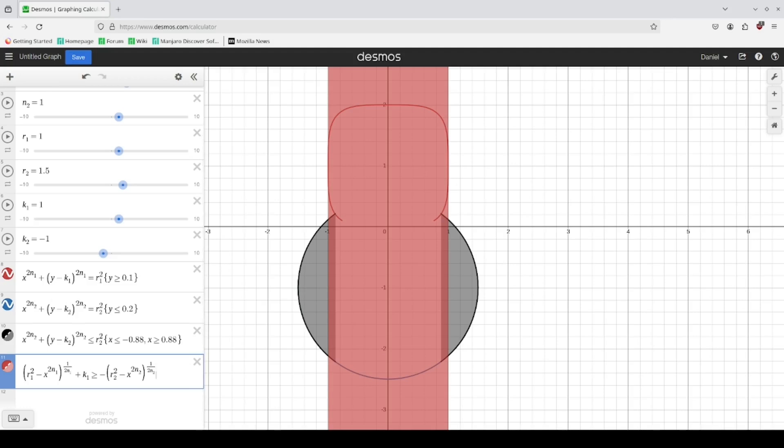You raise it to the power of 1 over this number here. And then once you have the solution solved, you add the k sub 2.